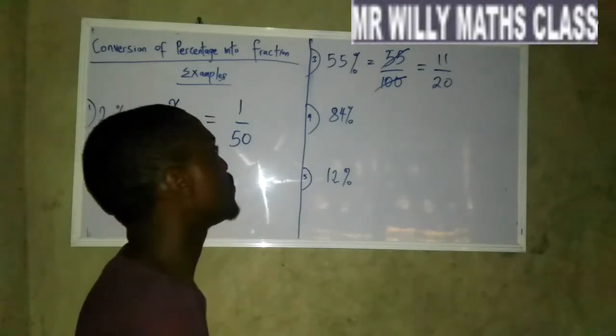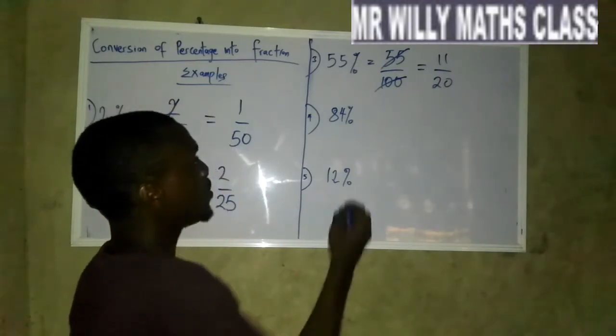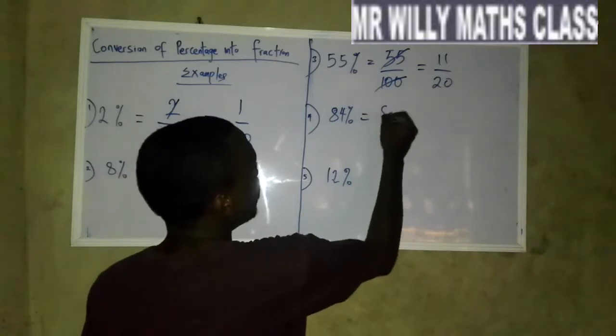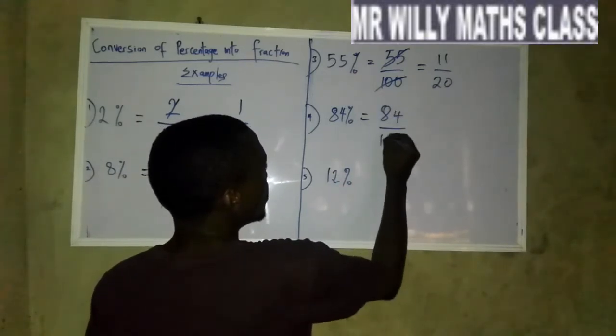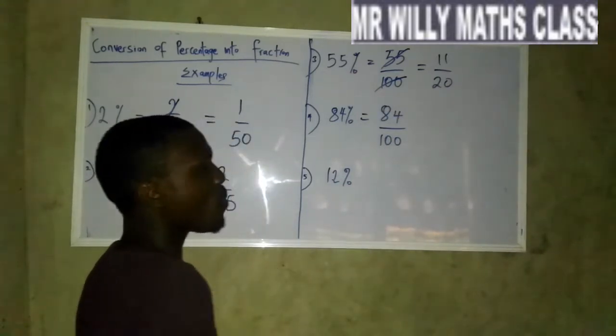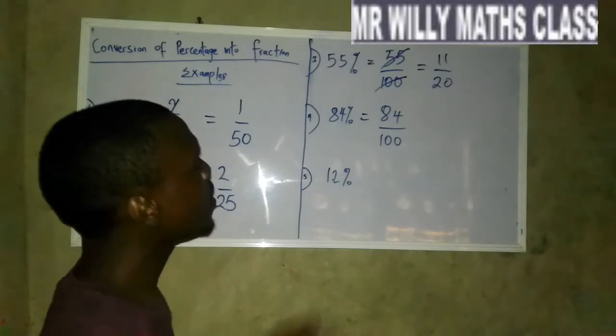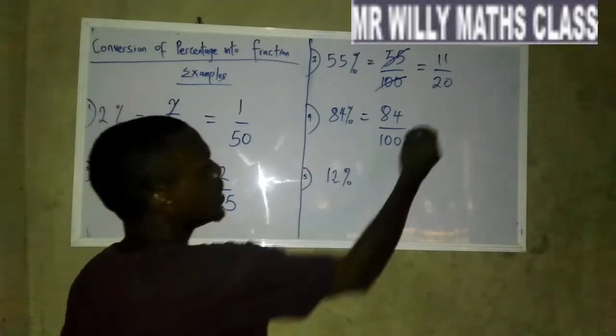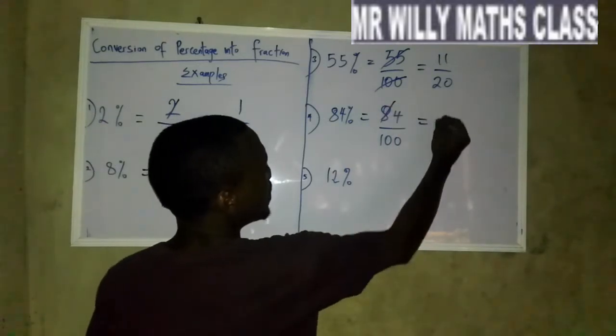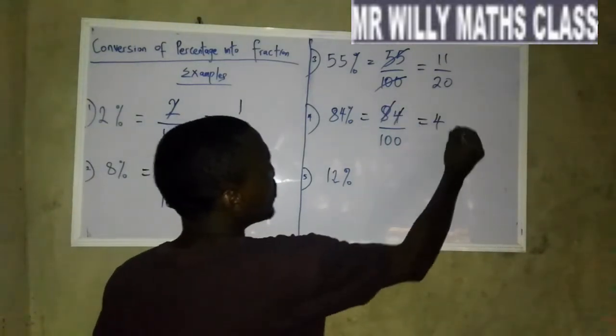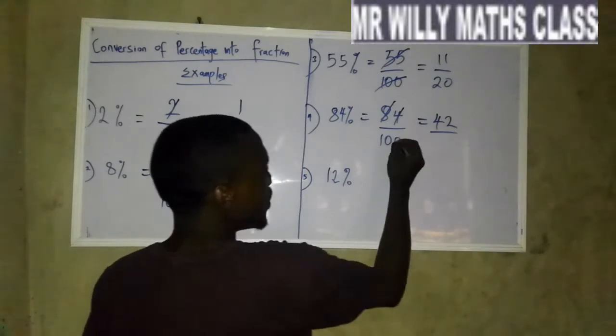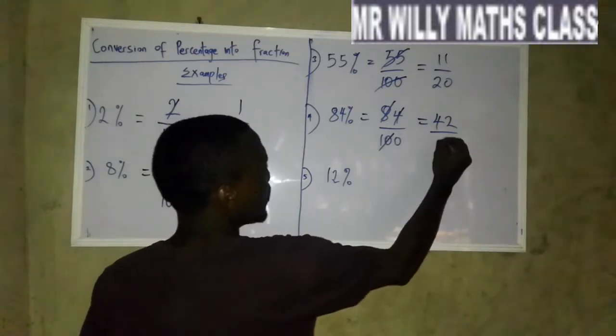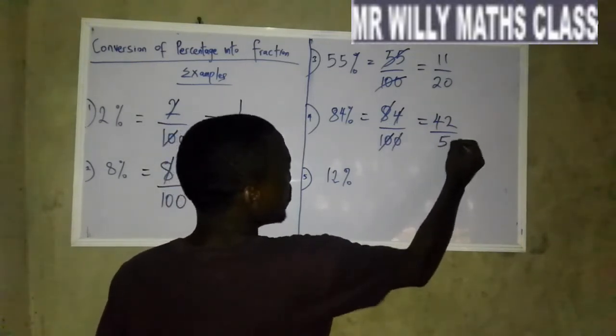Question 4, you have 84%. So your 84% is 84 over 100. Then we look for a common factor, that is a number that can divide both 84 and 100 without a remainder. 2 can do that. 2 into 84 is 42 and 2 into 100 is 50.